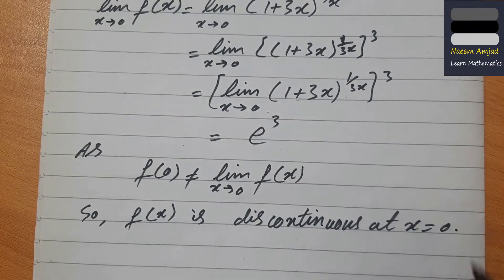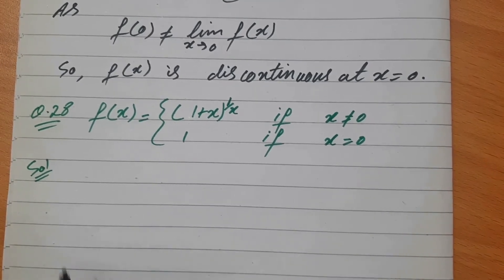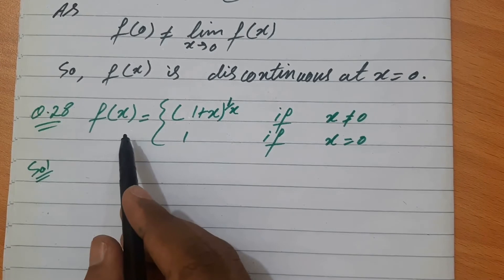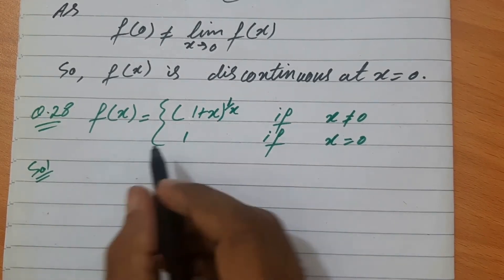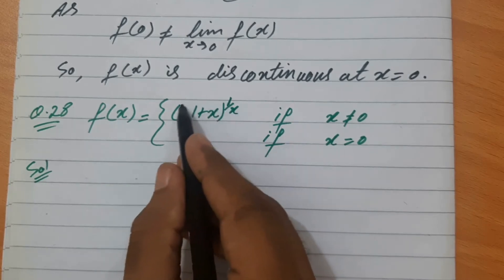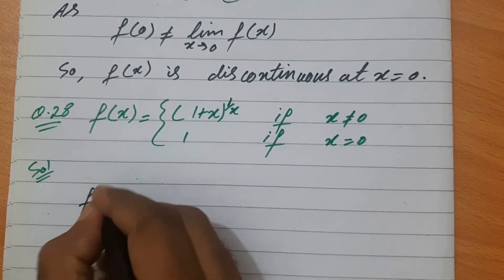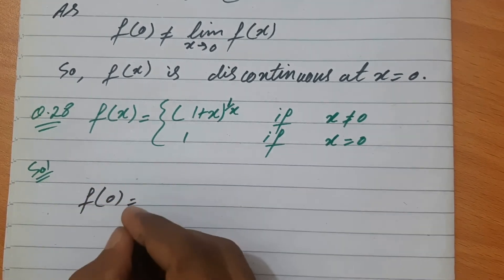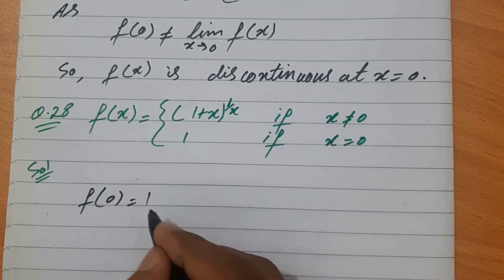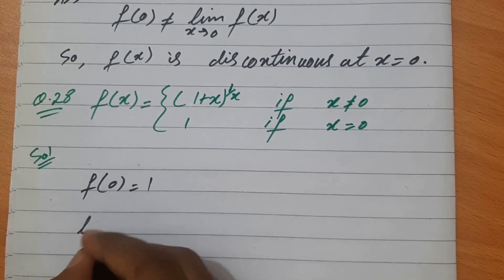अब Question 28 — यहाँ भी बताना है कि function x=0 पर continuous है या नहीं। यहाँ 1+x और reciprocal में 1/x है, यानी यह term limit apply करने के बाद e के equal होगी। f(0) find करते हैं: if x=0, then function = 1।